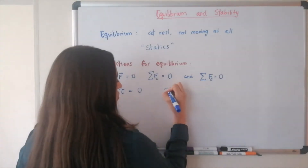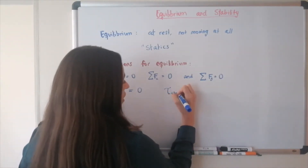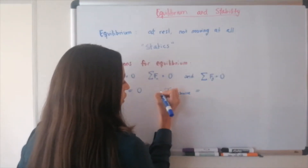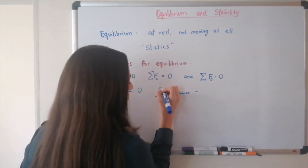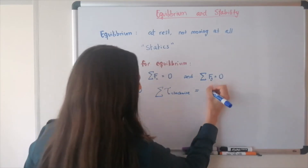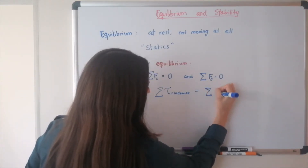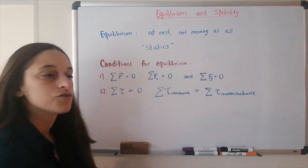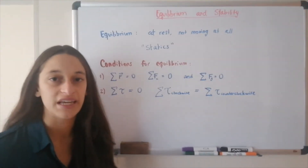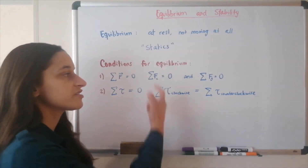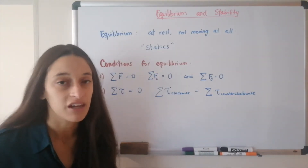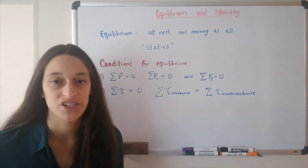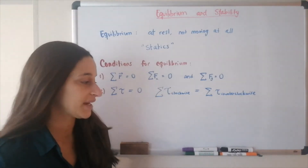We can write this as a rule: the sum of all clockwise torques has to be equal to the sum of all counterclockwise torques. For an object to be considered in equilibrium, both of these conditions have to be met at the same time. If not, it's either not in translational equilibrium or not in rotational equilibrium. So let's do an example.